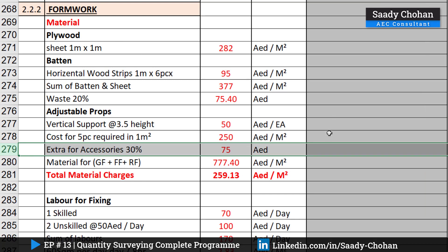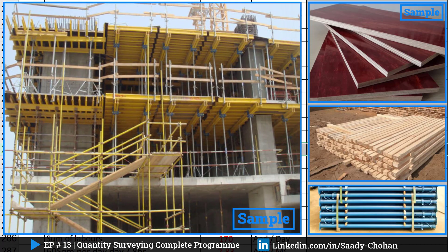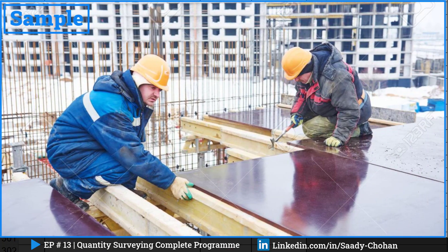Now, one important thing: this material is not on rent — we purchased it. The same props and the same material can be used on the second floor as well; we can do a few repetitions. So this cost is not for one time only. What I've done here is divide the total material cost by three, and you can see the actual cost per square meter. The next item is labor.